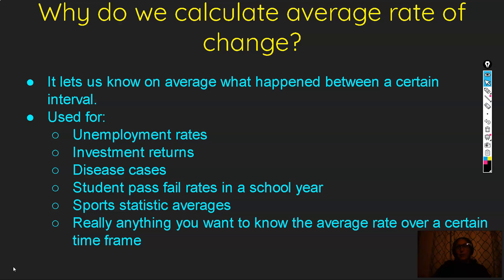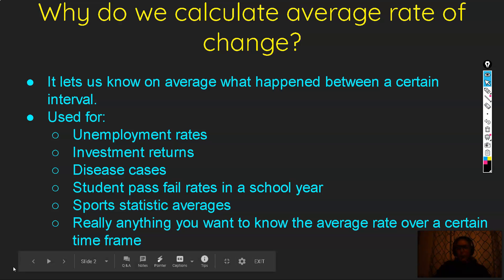It's also used for disease cases — we can say the average amount of flu cases per month was a hundred, or the average amount of COVID cases per month in 2020 was thousands. A student's pass-fail rate — on average this many students pass a course per year. Sports statistics — points per game average, your batting average — that's all calculated with average rate of change. Really anything you want to know the average rate over a certain time frame.